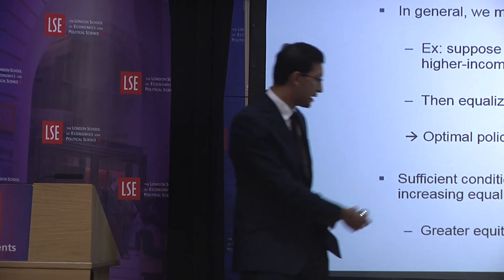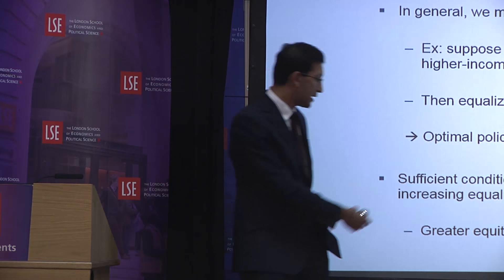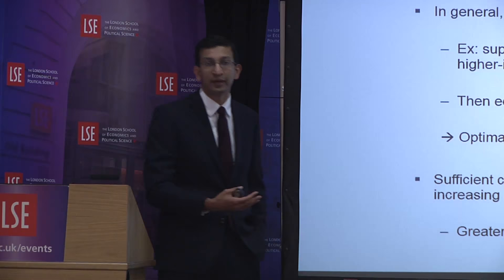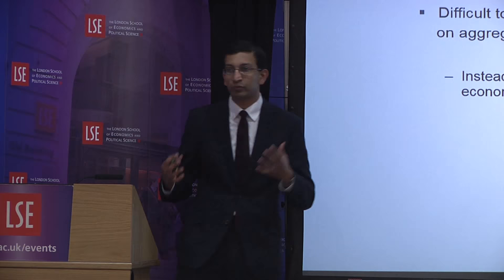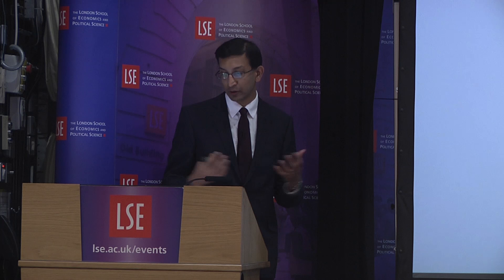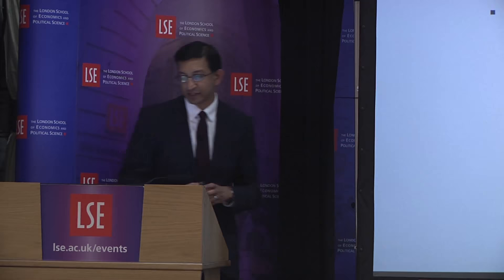If we find policies that both increase equity and increase output, we get unambiguously greater welfare. The broader question is whether greater equality of opportunity comes at the expense of lower growth rates or lower total GDP, or whether it goes in the opposite direction. Empirically, it's very difficult to measure the effects of changing equality of opportunity on aggregate growth directly because of many different mechanisms and complicated identification.